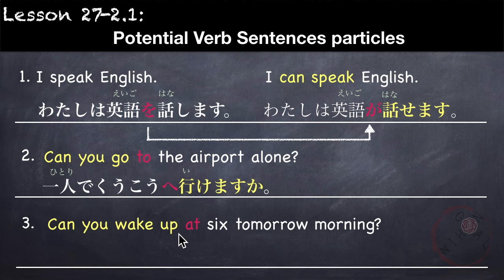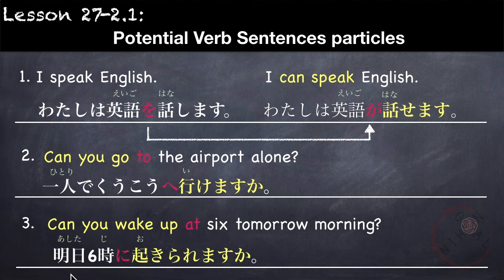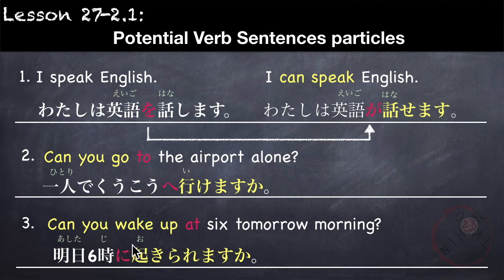Last example: Can you wake up at 6 tomorrow morning? あした ろくじに おきられますか？おきます is a Group 2 verb, so we add られ: おきられますか？The particle に stays the same. Full sentence: あした ろくじに おきられますか？